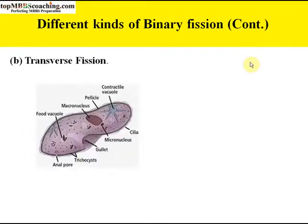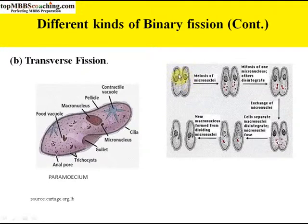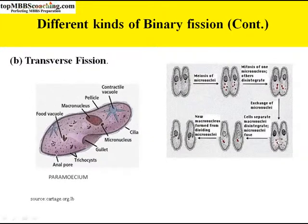Next is transverse binary fission, which happens in paramecium. When the plane of cytoplasmic division coincides with the transverse axis of the individual, the fission is called transverse binary fission. This is fission from the transverse axis of the organism.